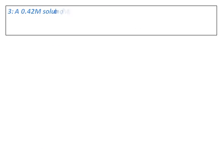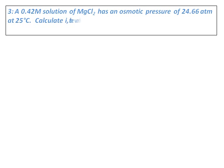This is the third question on osmotic pressure. A 0.42 M solution of magnesium chloride has an osmotic pressure of 24.66 atm at 25°C. Calculate i, the van't Hoff factor, and the percent ionic character of this solution. Generally, for magnesium chloride, i should equal 3.